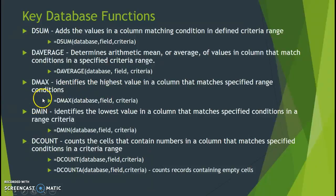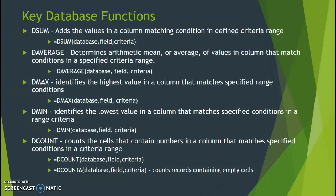DMAX identifies the highest value in the column you specify based on your range. DMIN identifies the lowest value in that specified column. DCOUNT does a count on cells containing numbers in the column that match the specified conditions in the range.